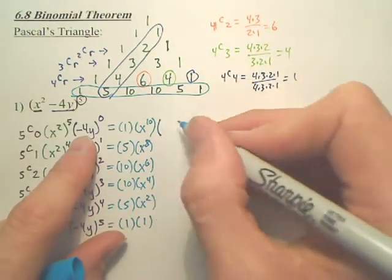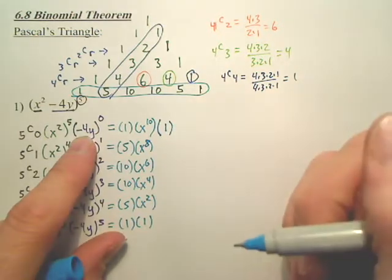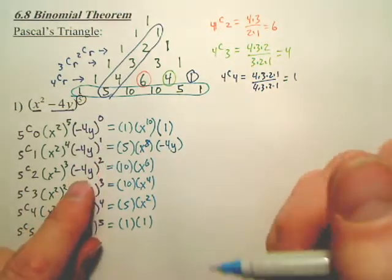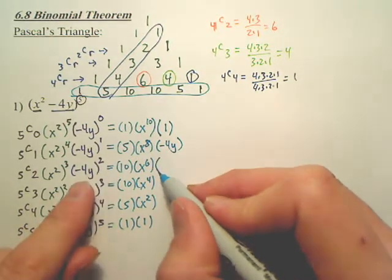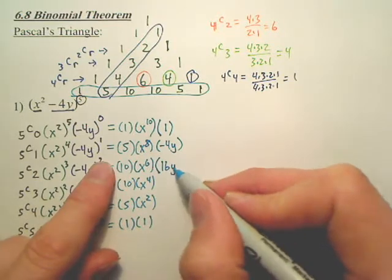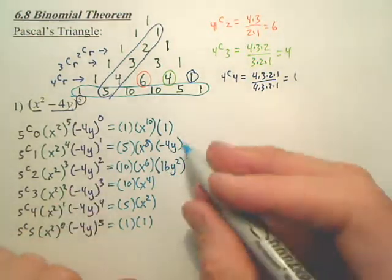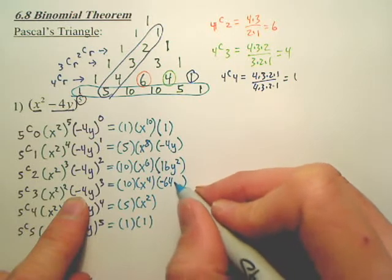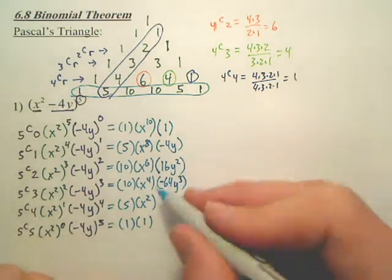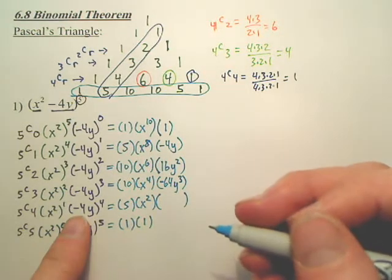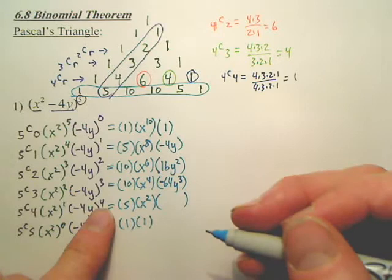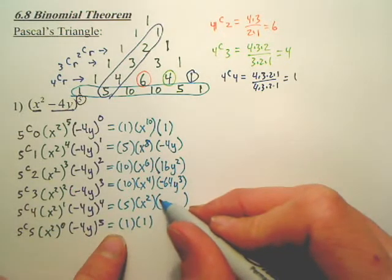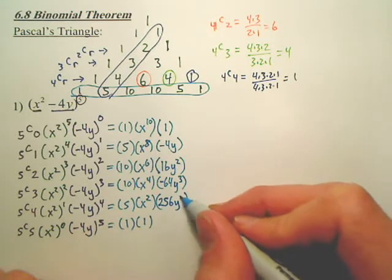Anything to the zero power is one. Anything to the first is simply itself. What's negative 4 squared? That's 16, then Y squared. What's negative 4 to the third? That's negative 64, and Y to the third. Negative 4 to the fourth — 4×4×4×4 — is 256, and Y to the fourth.